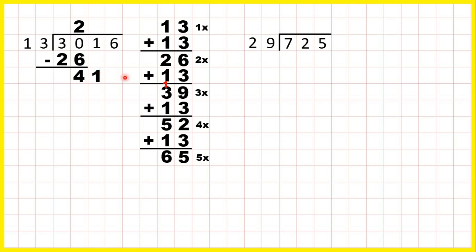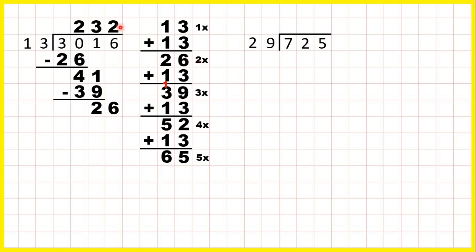39 is the closest number to 41 that's still less than 41, so we write 39 underneath. And because that's 3 times, we write 3 in our answer line. Now we subtract: 41 minus 39 is 2, and we bring down the 6, so we have 26 divided by 13. We can see that that's exactly 2 times, so we have 2 in our answer.